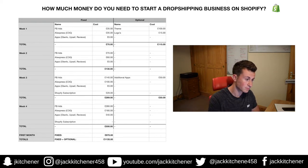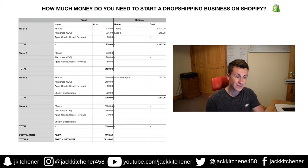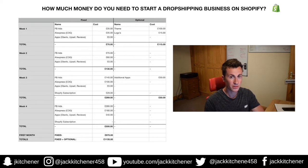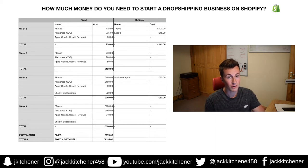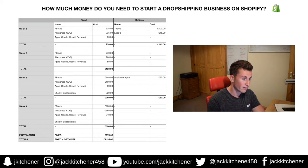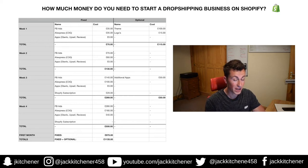Week three is when I'm assuming things start to take off. Again, I've based it on things going well — it's better to over-budget so that when you prepare and start your business you're over-prepared rather than under. Facebook ads: doubled again to £140, which works out at exactly £20 per day. Cost of goods goes up to £100.